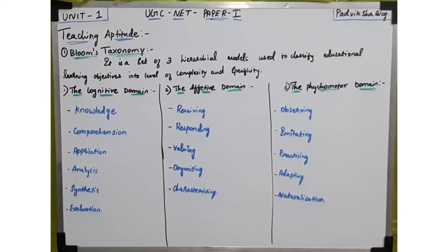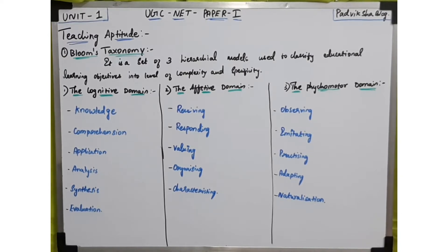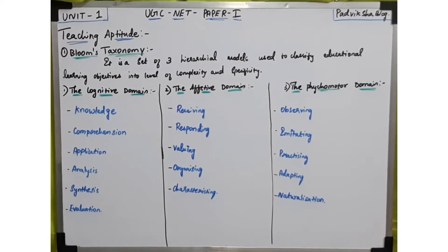Bloom's Taxonomy covers learning objectives in three domains: cognitive, affective, and psychomotor. Benjamin Bloom identified these three learning domains. In a sentence, Bloom's Taxonomy is a three hierarchical model consisting of three learning domains.